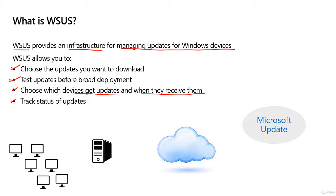If there's a specific update that fixes a major security flaw, you can go to WSUS and immediately find out which computers don't have that update installed. If any are missing it, you need to remediate and get it installed right away or as soon as possible.